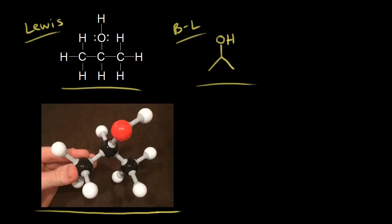Let's start with the carbon in the center — that's our carbon in magenta. The carbon in magenta is sp3 hybridized, so we would expect tetrahedral geometry around that carbon. And if you look at that carbon in the picture, you can see that this bond and this bond are in the same plane. So a line represents a bond in the plane of the paper.